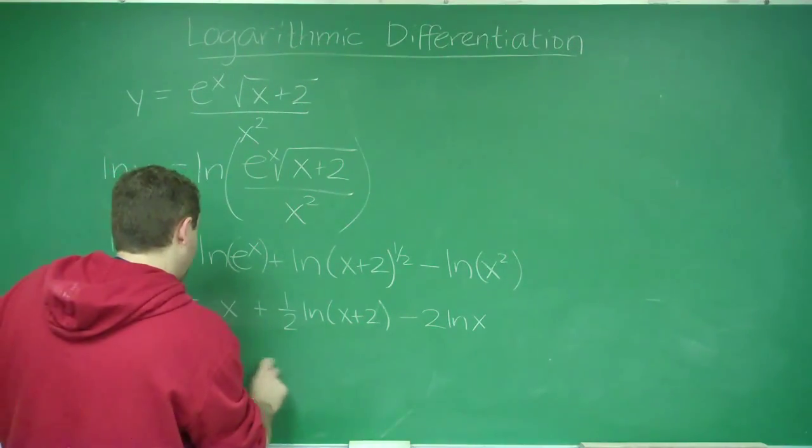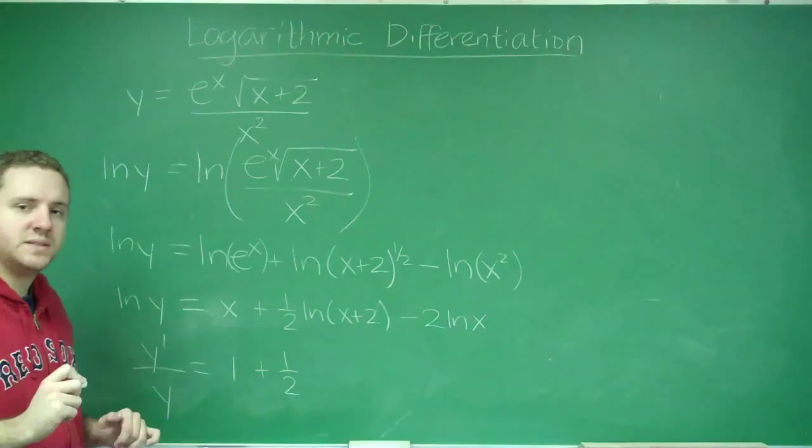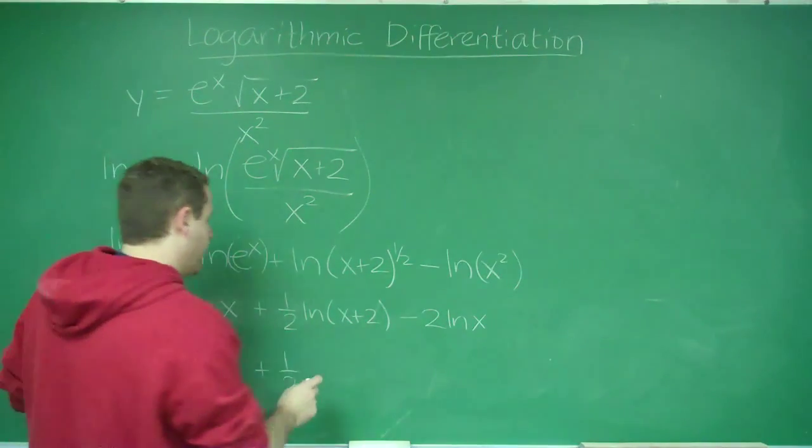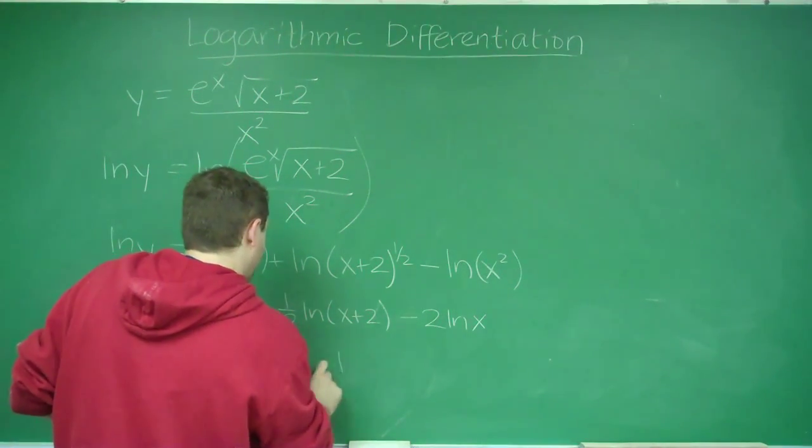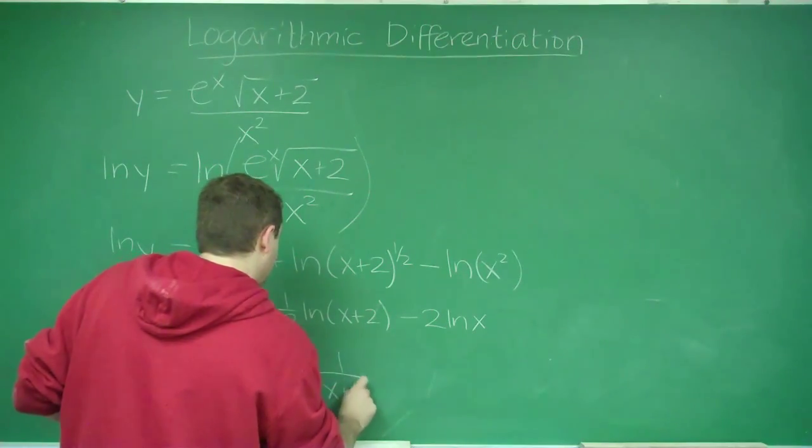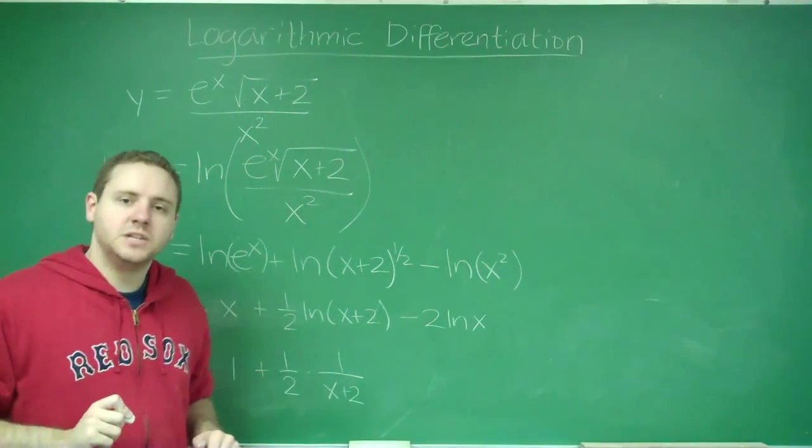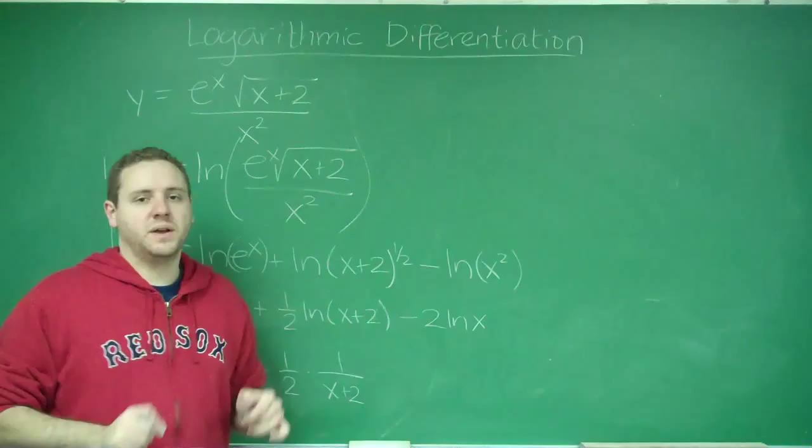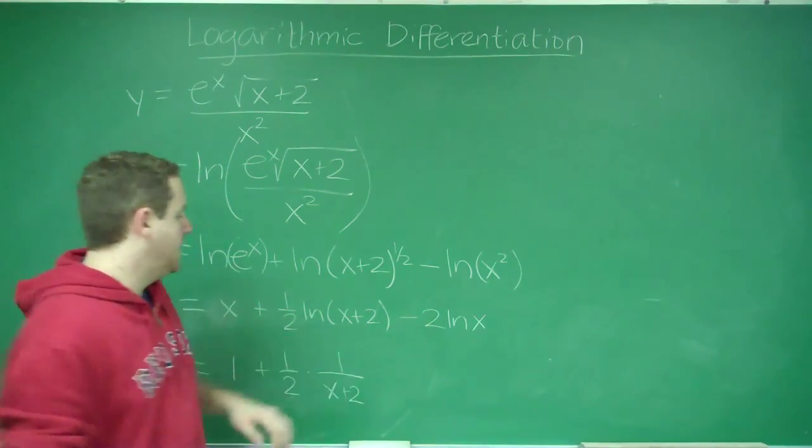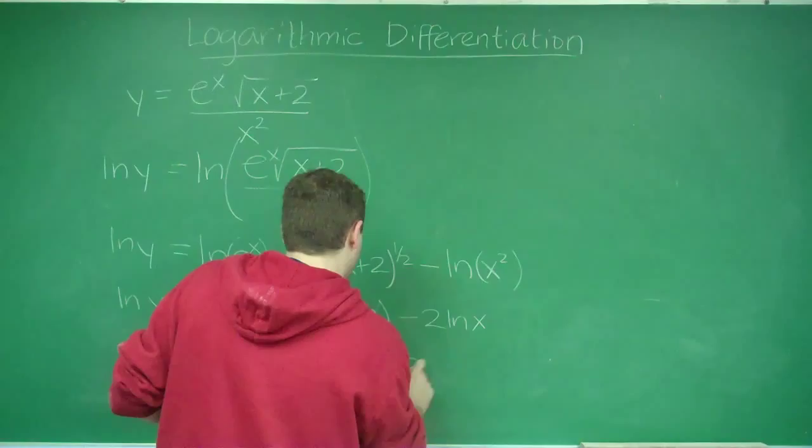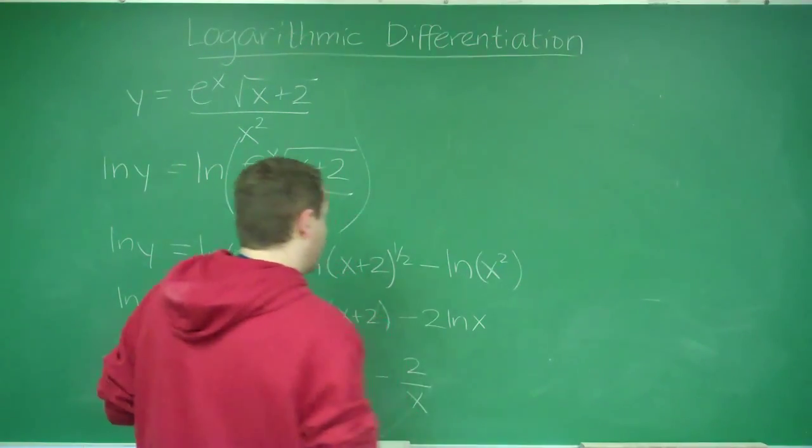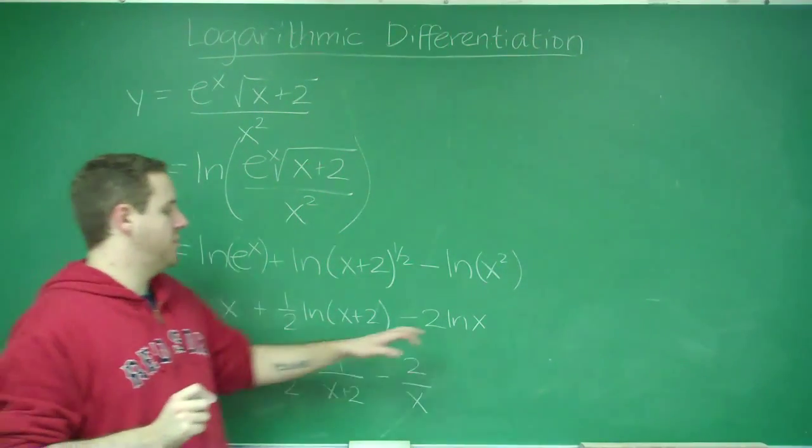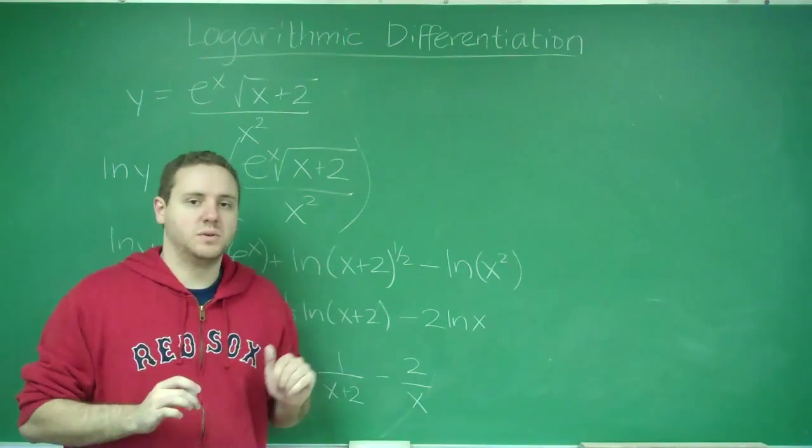Here we have the one-half that sticks around because it's a constant. The derivative of ln of x plus 2 would be 1 over (x plus 2). And we don't have to worry about any chain rule because the derivative of x plus 2 is just 1. And here we would get minus 2 over x because the derivative of ln x is 1 over x and we just have it multiplied by 2.